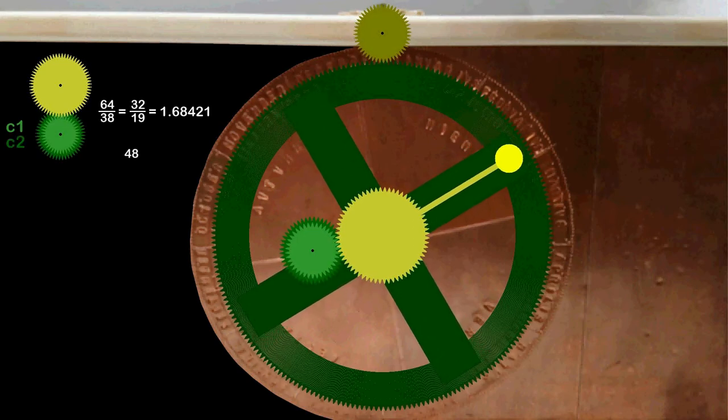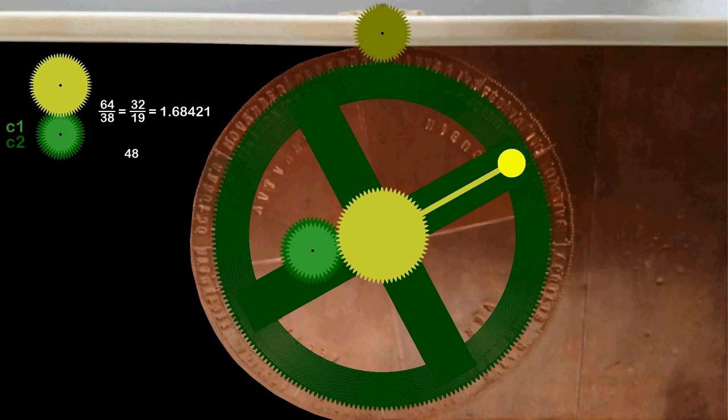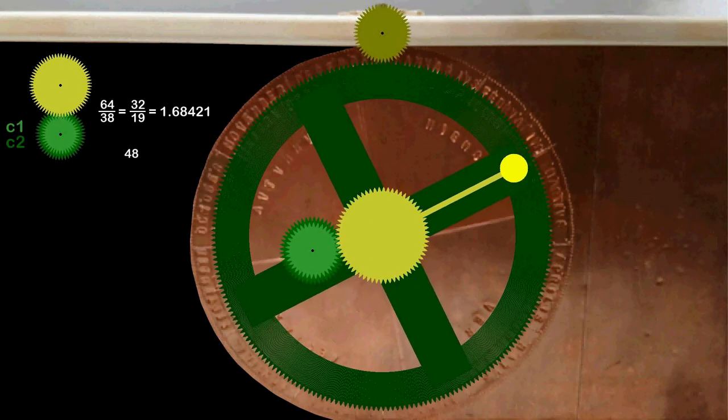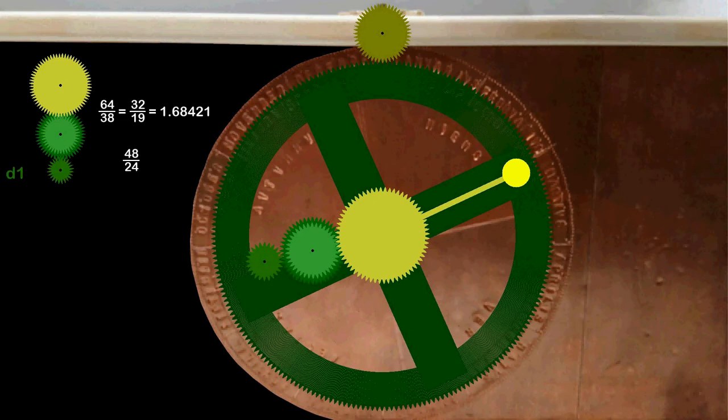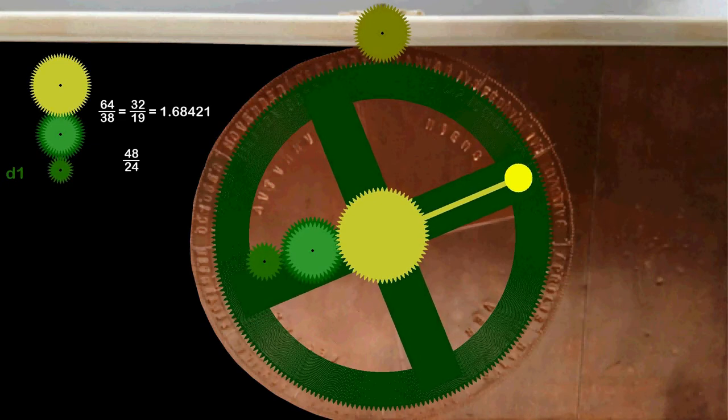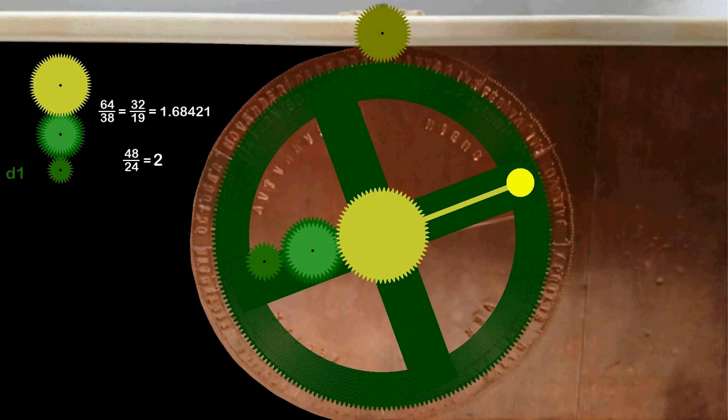Below C1 is C2 with 48 teeth. Both turn at the same speed.